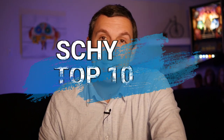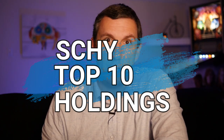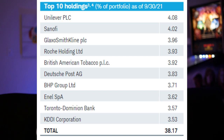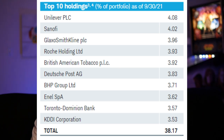Now let's look at what SCHY actually holds. The top 10 stocks in the SCHY ETF make up just over 38% of total holdings. The top holding is Unilever, followed closely by Sanofi, GlaxoSmithKline, and Roche Holding Limited. Rounding out the top 10 are British American Tobacco, Deutsche Post, BHP Group, Enel, Toronto Dominion Bank (TD Bank), and KDDI Corporation. Each of those top 10 is pretty evenly weighted at about three and a half to four percent overall.